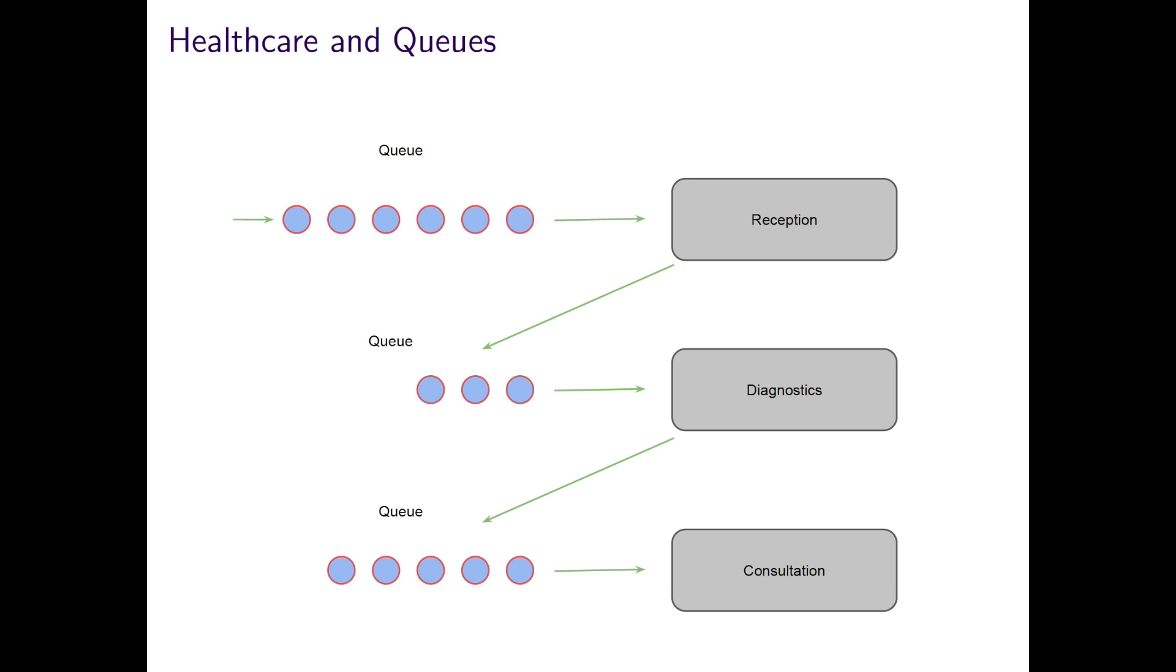This diagram shows an example of an outpatient clinic where people arrive, join a queue for the receptionist, then wait to see a nurse for diagnostics, and then go back to the waiting room to queue to see the consultant. We can model such a system, for example, to look at staff levels versus patient waiting times and help move patients through the system more effectively, trying to meet waiting time targets whilst ensuring our staff are effectively rostered.